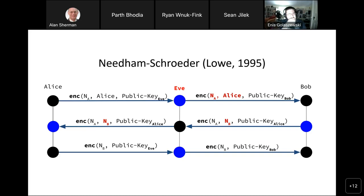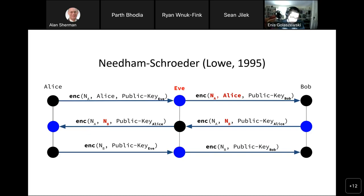Eve takes Bob's nonce and transplants it from Q to P — protocol interaction again. Eve claims this message is from Eve, not from Bob, and there's no way for Alice to know. Alice decrypts Bob's nonce for Eve, acting as a confused deputy or decryption oracle. Alice encrypts nonce B under Eve's public key in the final message. Eve extracts this, sends it to Bob, completing both protocols P and Q — authenticated to Alice as Eve, and to Bob as Alice.